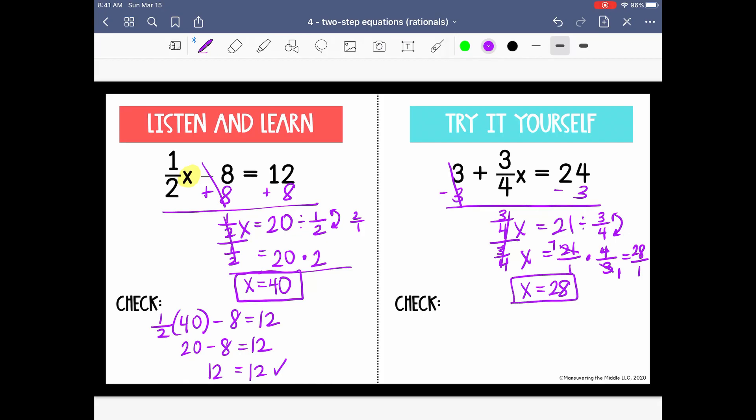So that's what we got for our solution, but let's check it by plugging it back in for x to make sure that we're right. So is 3 plus 3 fourths of 28 actually equal to 24? Well, we need to multiply 3 fourths times 28 first, so I'm going to do that over here where I have a little space. Again, I like to cross-cancel when I can to make the numbers smaller. So 4 divided by 4 is 1. 28 divided by 4 is 7. 3 times 7 is 21 over 1. So that's going to be 21. So 3 plus 21 is 24. This is true. 24 equals 24. So we are correct.